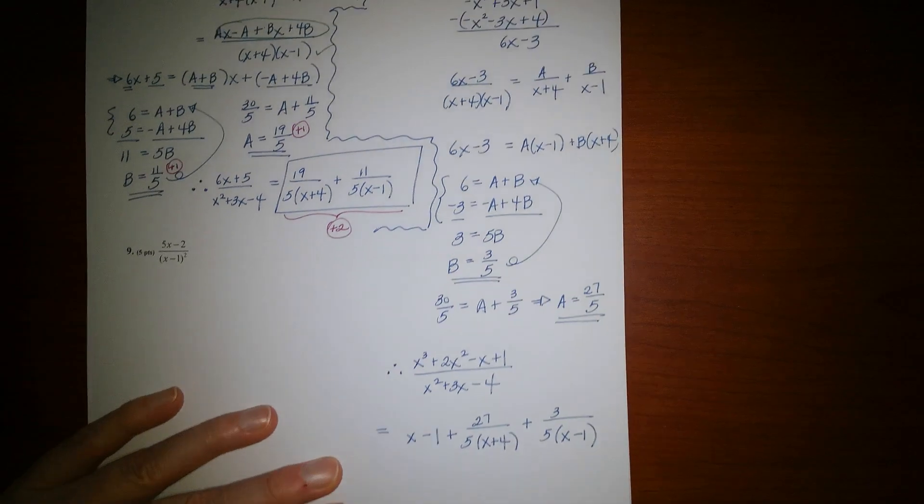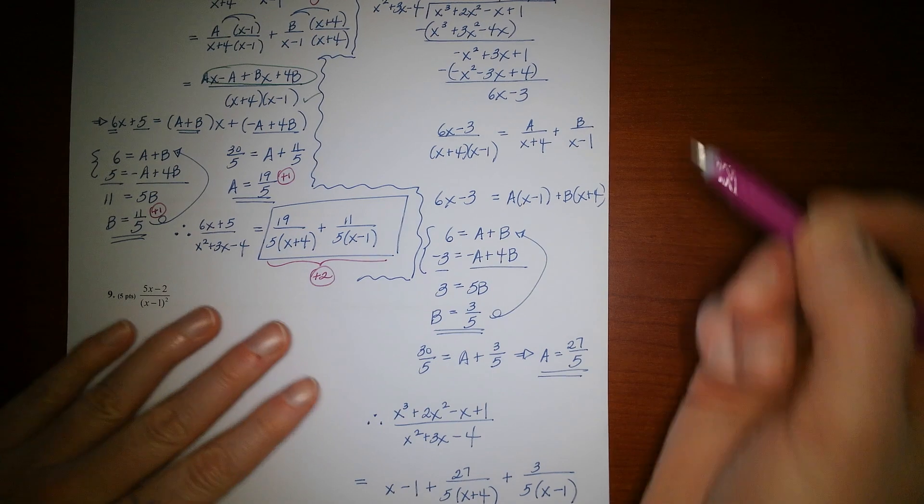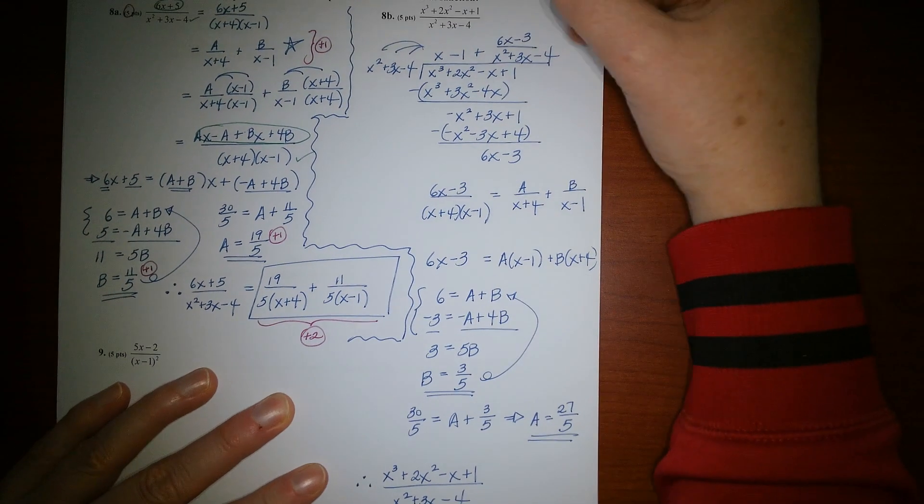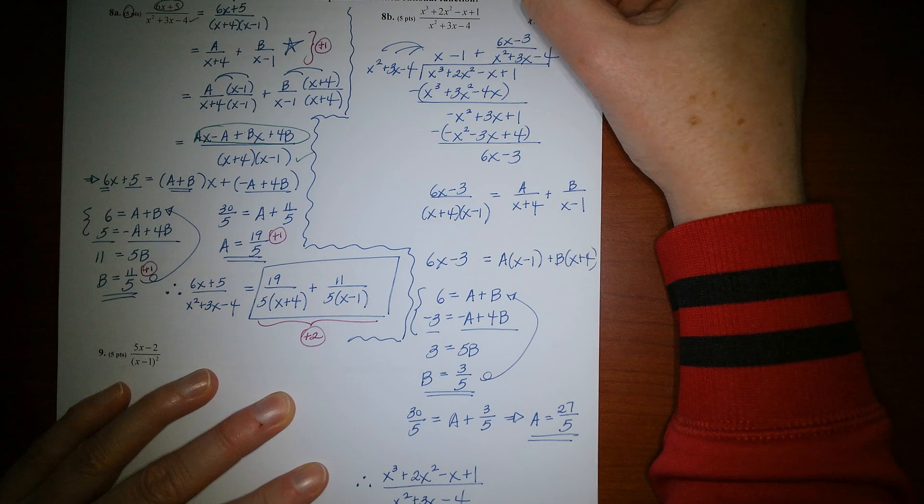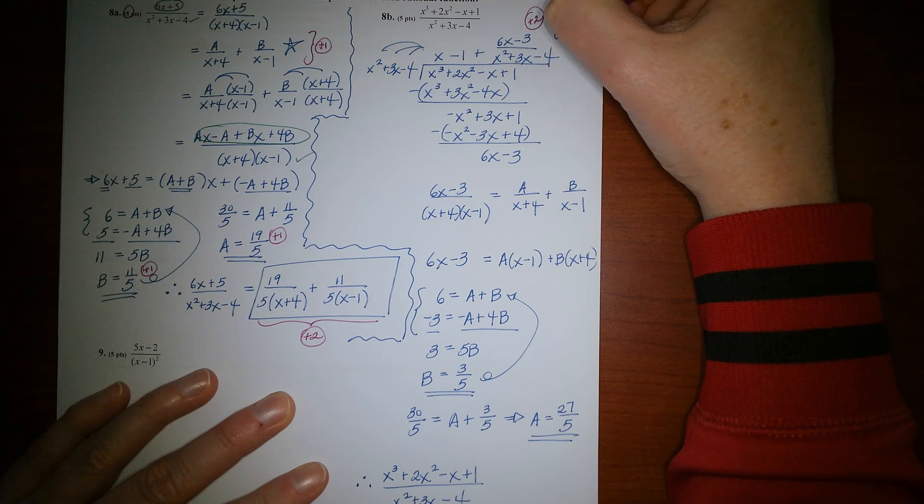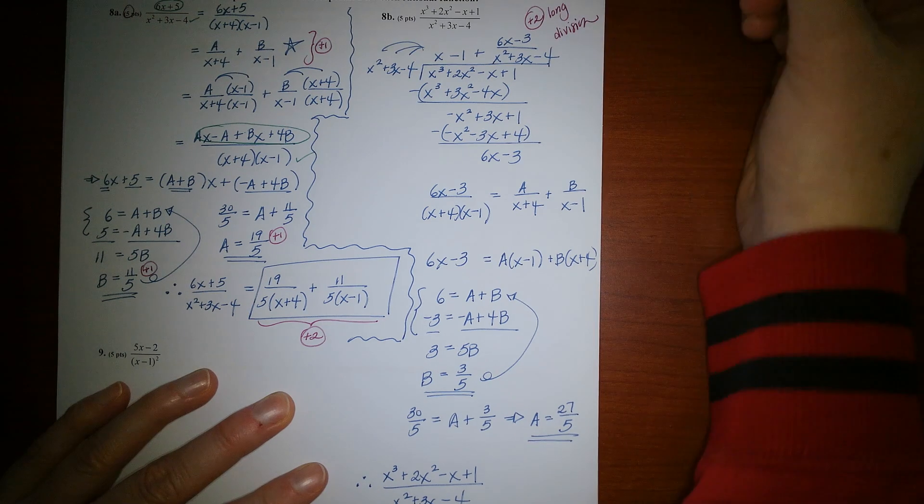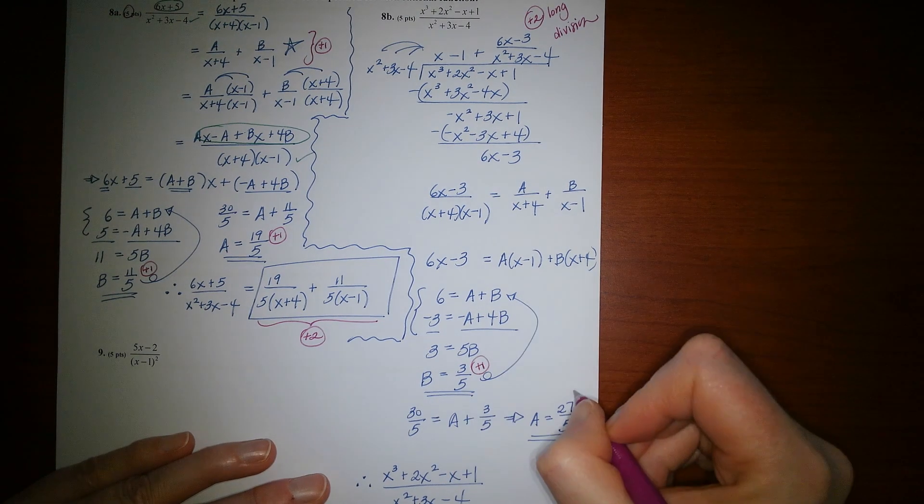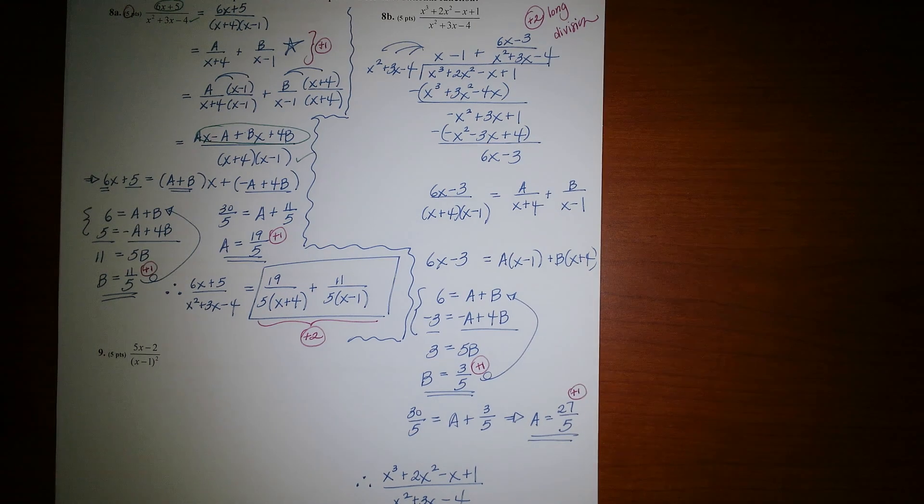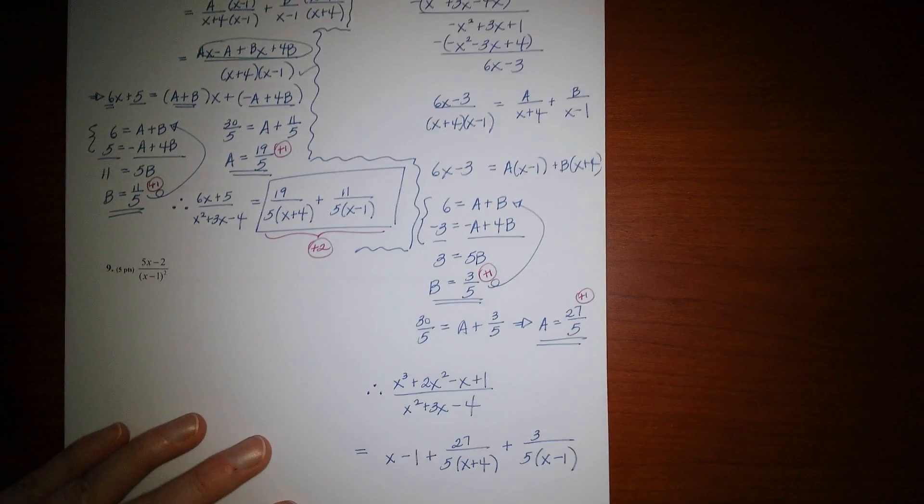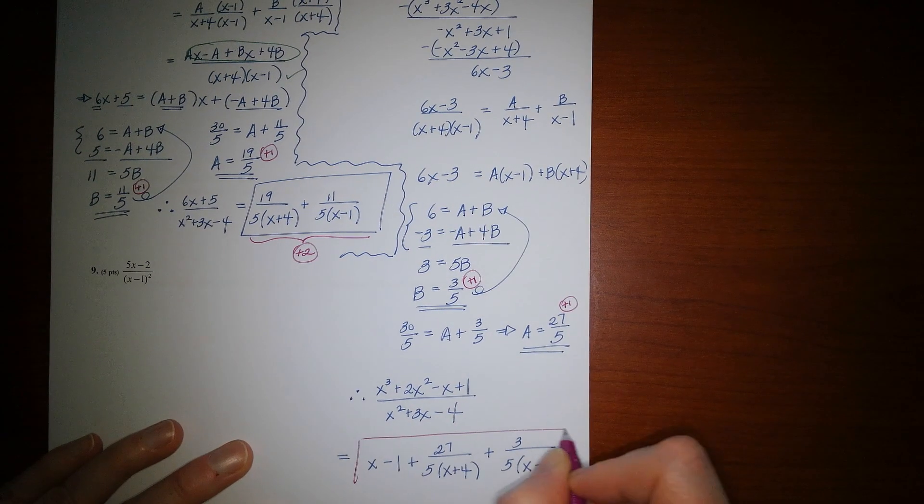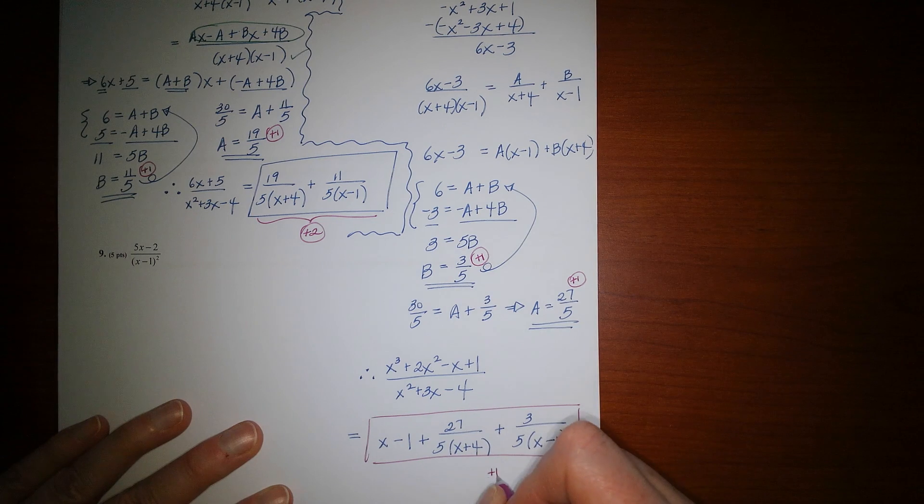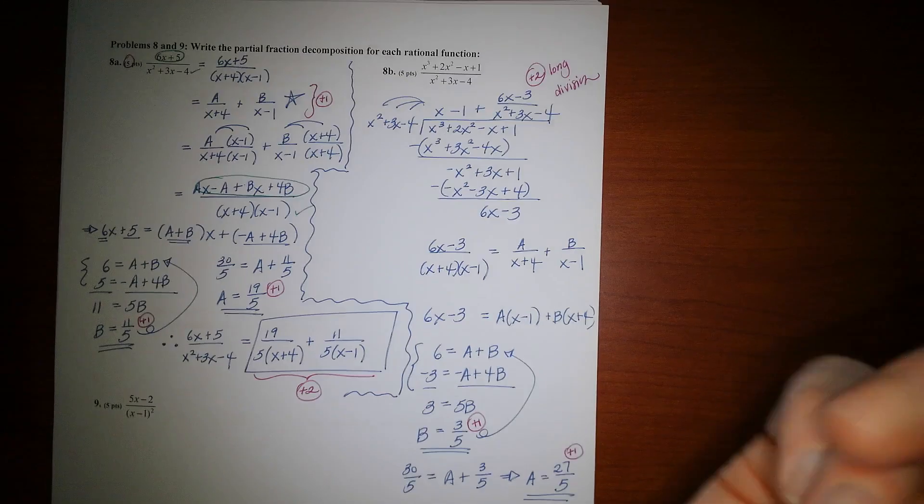All right. Let's find out where the partial credit is if you need it. All right. We had five points altogether. You're going to get two points for knowing that you should use long division. So evidence of long division. Even if you messed up the long division, you get two points for showing that you knew to do it. You're going to get one point for getting 3 fifths and one point for getting 27 fifths for your constants. And then your final answer, which would have the whole part and the fractions as well, is worth the last point. All right, my friends. So altogether, that's your five points.